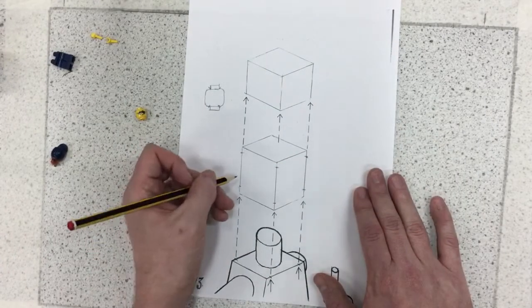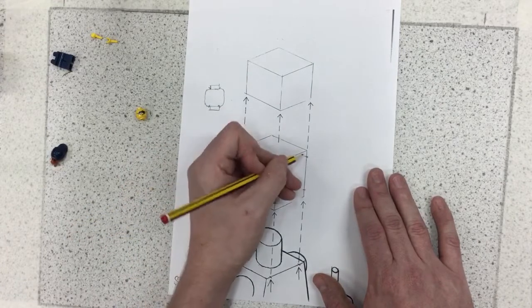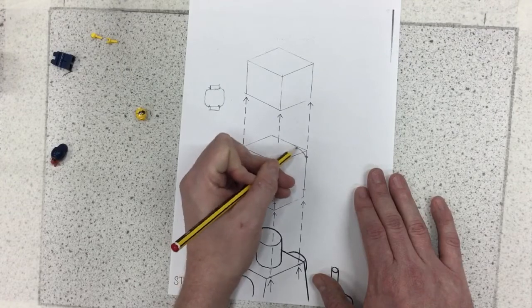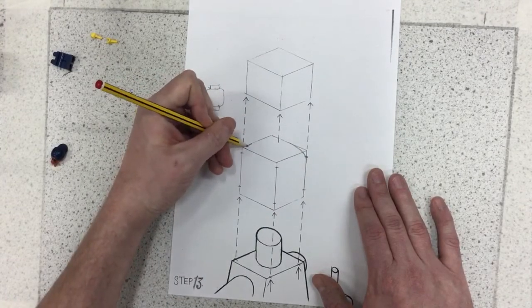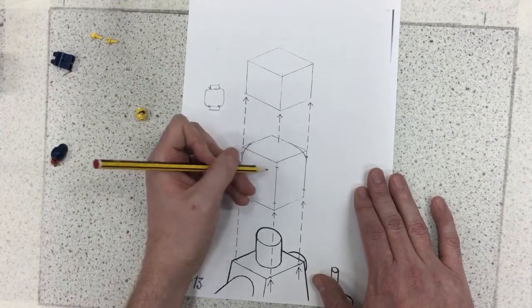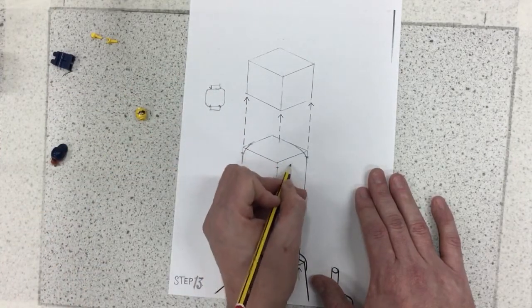So I would then draw that in, so I would say okay well that tapers in, we can go like that, try and match that curve. Okay this one probably don't need to do because you know if it was a curve it would be like this wouldn't it.